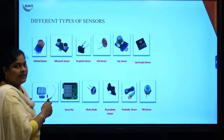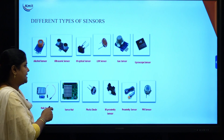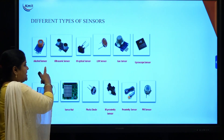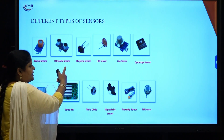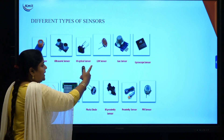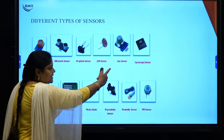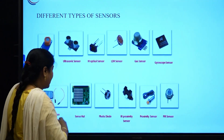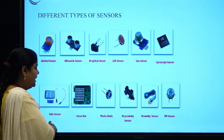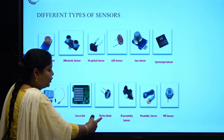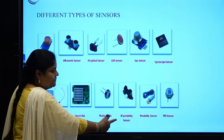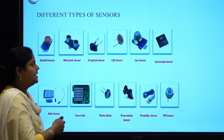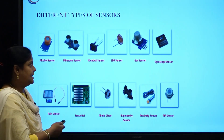There are different types of sensors. Some of them are listed in this figure, such as alcohol sensor, ultrasonic sensor, IR sensor, LDR sensor, gas sensor (which can detect gas leakage), rain sensor, photodiode sensor, IR proximity sensor, and PNR sensor.